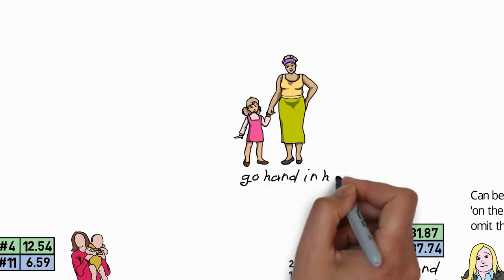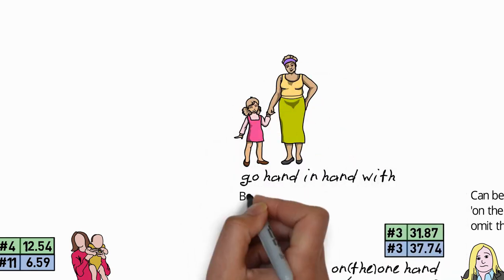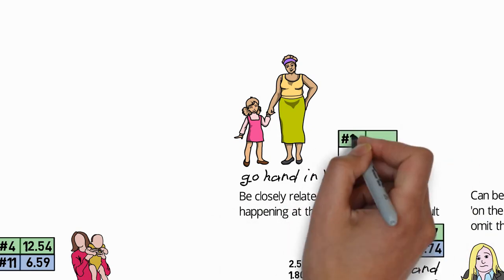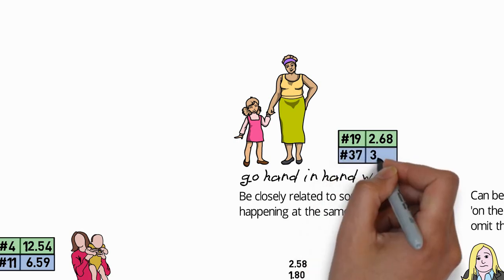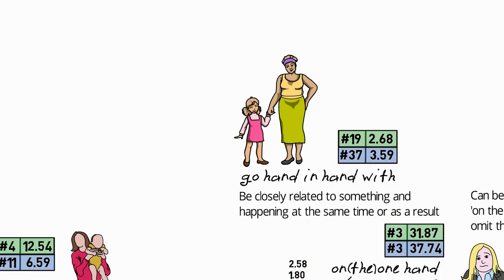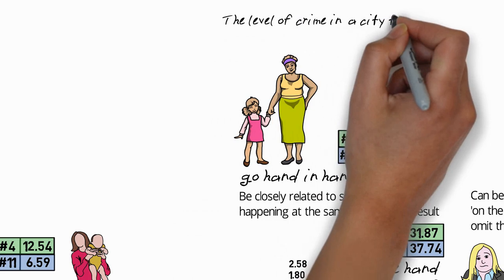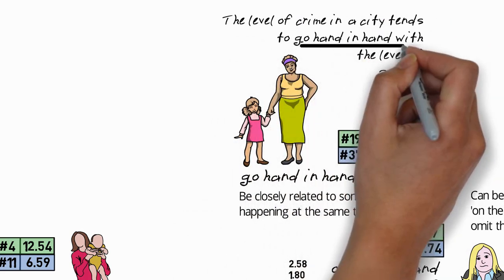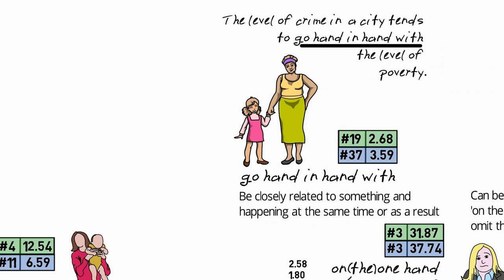In other words, the stability of an economy is controlled by its investors and borrowers. Second example: in the 18th century, power in the country was concentrated in the hands of a few corporations. The next body idiom is go hand in hand with, which means be closely related to something and happening at the same time or as a result.